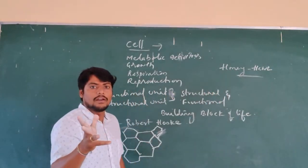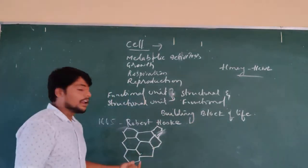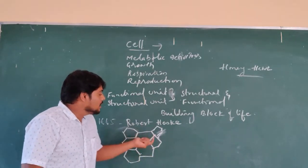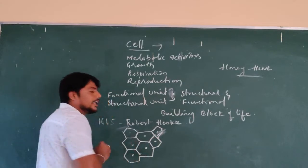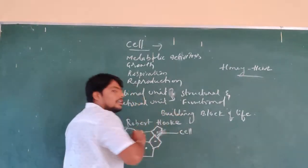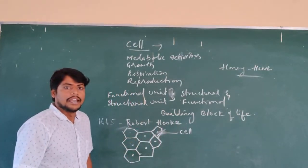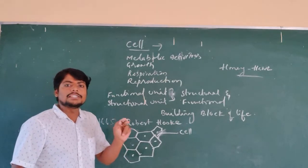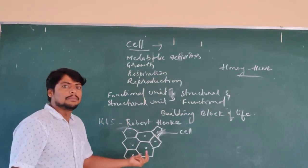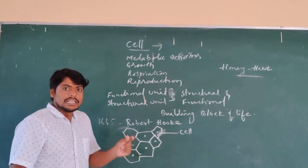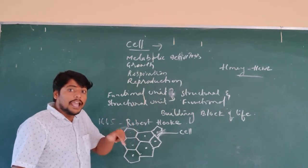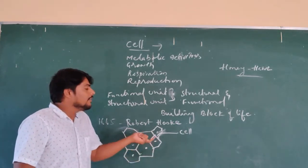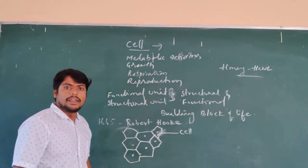In a honeycomb, we can notice different compartments. What he observed under the microscope were similar compartments — different portions arranged like a honeycomb. He called each of these compartments a cell. This is where the discovery of the cell was started, and Robert Hooke named these compartments as cells. He collected a slice of cork and observed it under the simple microscope, and he called these compartments cells.